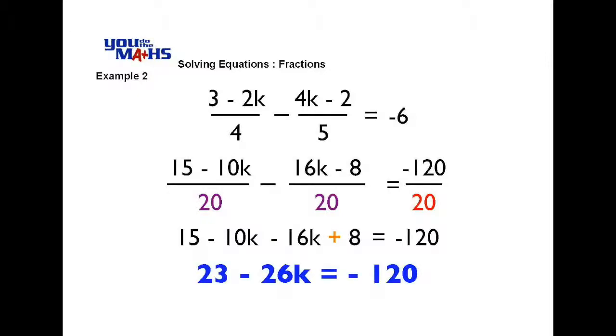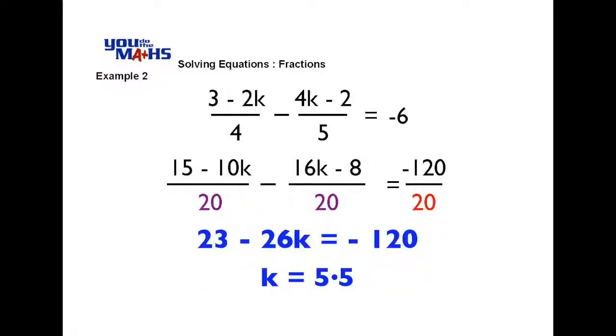Now we're not going to go through and solve that equation because that's similar to ones that have been done before. But if you do solve that, you'd take the 23 across to the right hand side and divide both sides by negative 26 to get k by itself, and your solution is k equals 5.5.